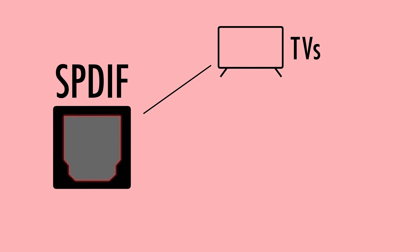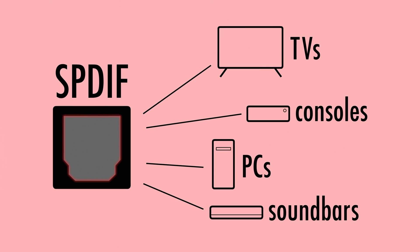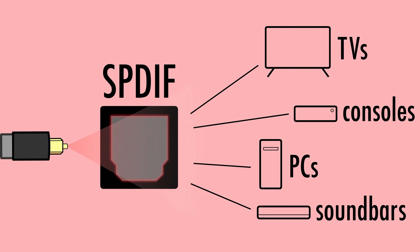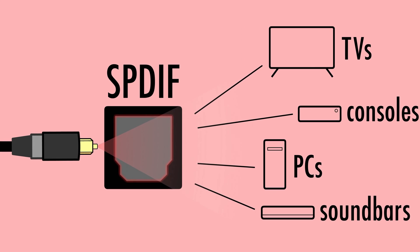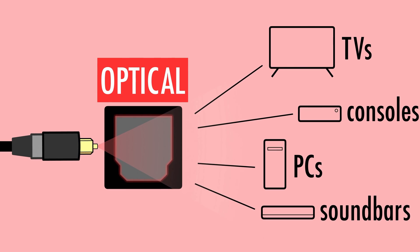SPDIF, especially the optical type, is commonly found on consumer entertainment systems such as TVs, games consoles, PCs, and soundbars. All you need is an optical Toslink cable to connect these devices directly to each other. Keep in mind that SPDIF ports often might just be labeled as optical in and optical out.